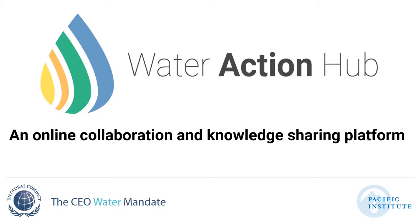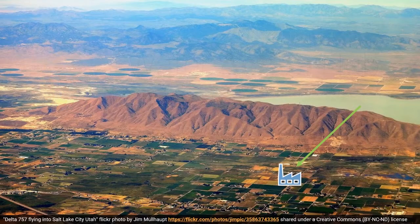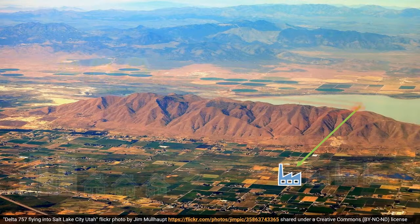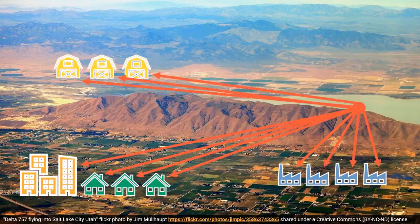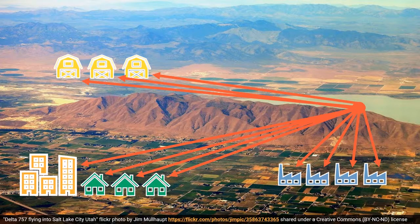One actor's efforts alone cannot ensure a river basin's sustainability. A business, for example, may implement state-of-the-art water efficiency measures at its own facility, but if its neighbors are using water unsustainably, then both the business and the local river basin are still at risk.